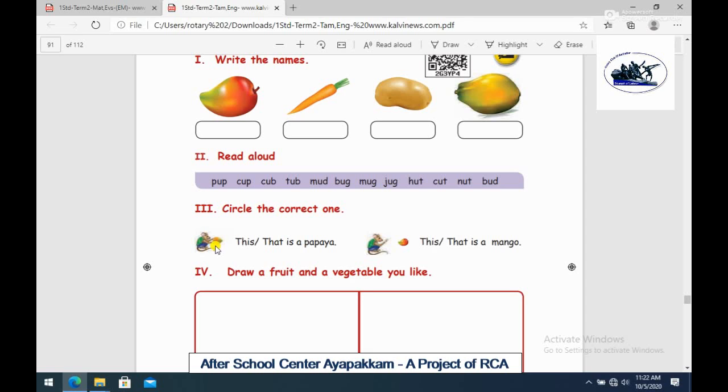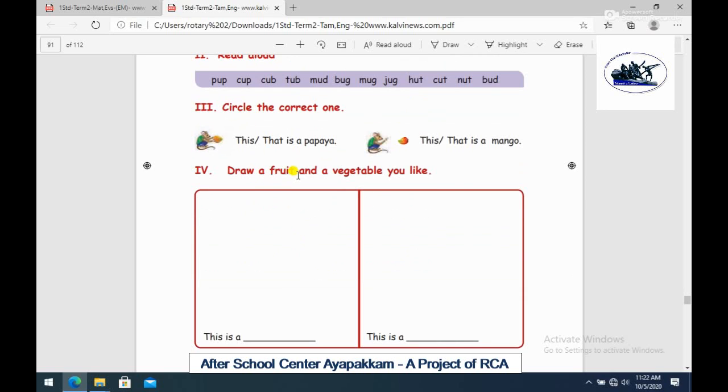Papaya, we say this is a papaya within this. Mango, we say that is a mango. Let's see the difference. Draw a fruit and a vegetable you like. If you add a fruit and a vegetable, you can add two boxes. You can add that name.